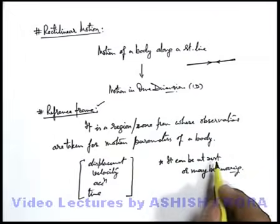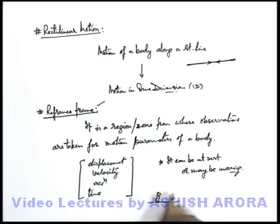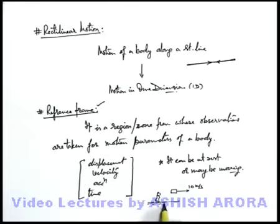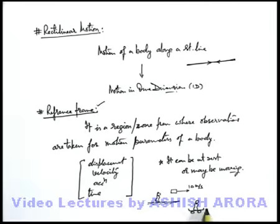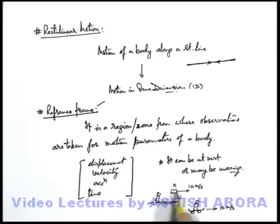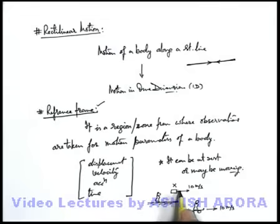For example, if you are standing on the ground and looking at a body moving at a speed of 10 meters per second, then in your reference frame — with respect to ground — the body is moving at 10 meters per second. But the same body, when observed by a boy standing on a skateboard moving at 10 meters per second, he'll feel that this body X is at rest. So in the reference frame of observer A, this body is moving at 10 m/s, and in the reference frame of observer B, this body is at rest.